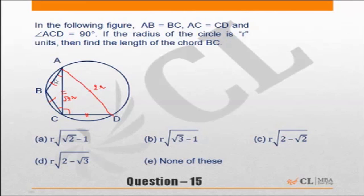This is an isosceles right-angled triangle, so this angle here is 45 degrees. Since ABCD is a cyclic quadrilateral, angle B is going to be 135 degrees.